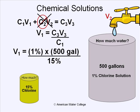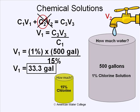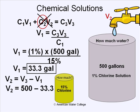Doing the math, we find we'll be adding 33.3 gallons of 15% chlorine. We're halfway there — now we need to calculate how much water to add. The volume of water equals the difference between the total volume of 500 gallons and the volume of chlorine added. So V2 equals 500 gallons minus 33.3 gallons.